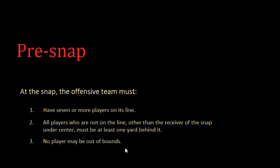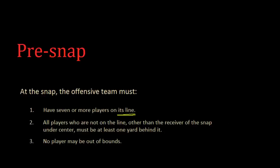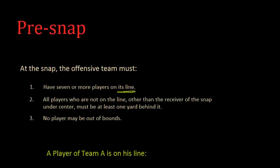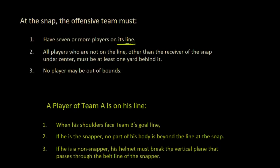That last rule makes a lot of sense — you can imagine what a team tried that forced that rule to be written. But let's focus on the first two stipulations, particularly the first one: what does it mean to have a player 'on the line'?